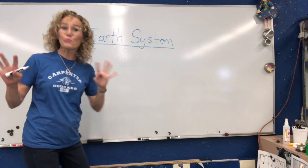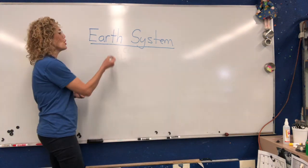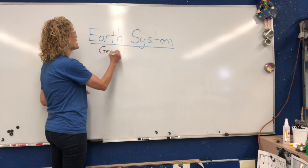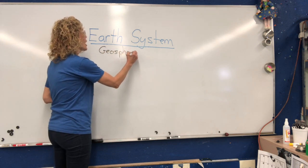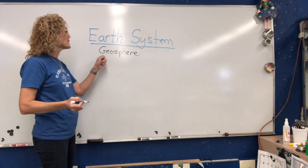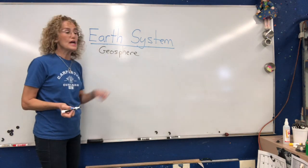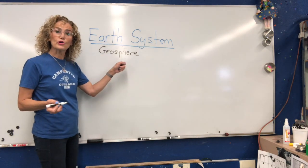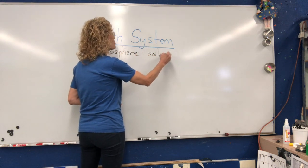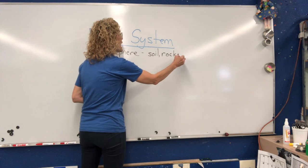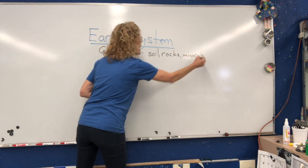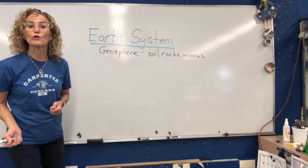We've talked about three of them, kind of. The first one is the geosphere. We talked a lot about this in fourth grade. Geo means Earth, so this is the soil, rocks, and minerals — all the parts that are the solid Earth.